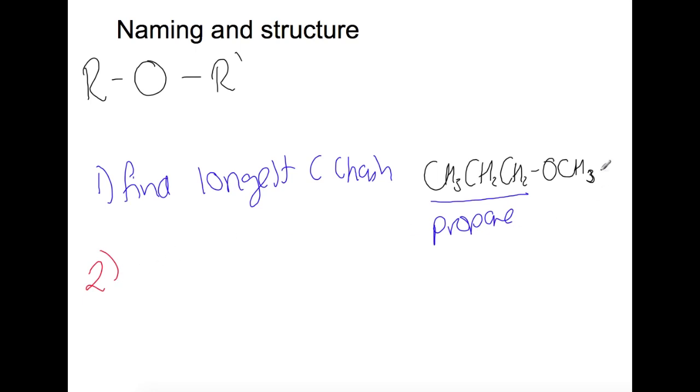Step two is to look at the chain that's attached. We're going to treat this like a branch but this time instead of ending in YL it's going to end in oxy. So we have one carbon so that's meth and then attached to the carbon we have the oxygen so that's oxy. That goes at the start of the name so we have methoxy propane.